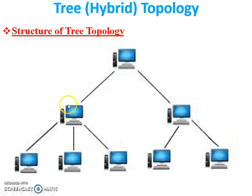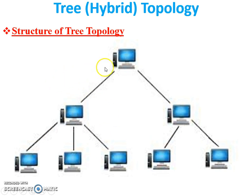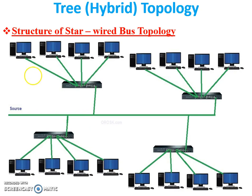This is the overall structure of a tree — everybody knows what a tree looks like. So we can say that this is the tree topology. As per the structure of a tree, we can say it is tree topology. Now see the functionality — the basic structure of tree topology. This is the tree topology, also called star-wired bus topology.